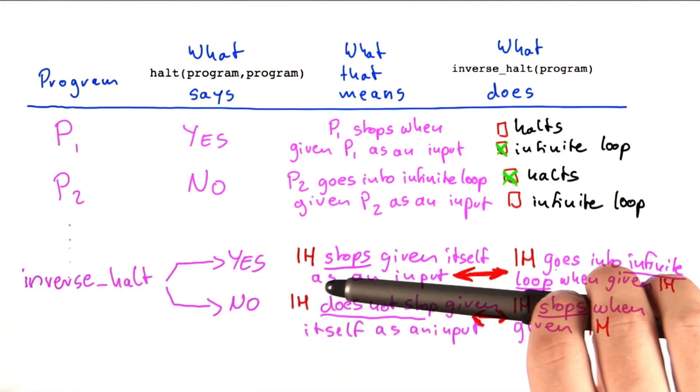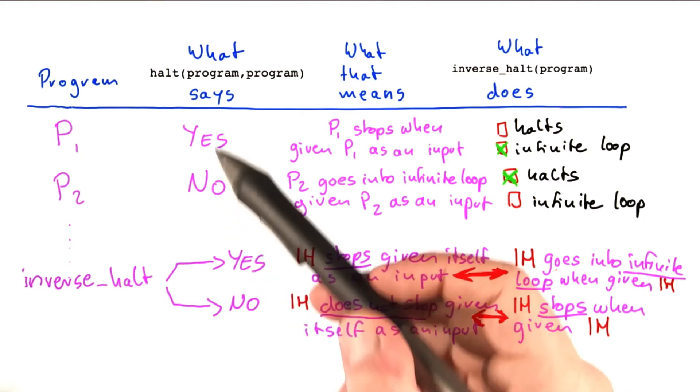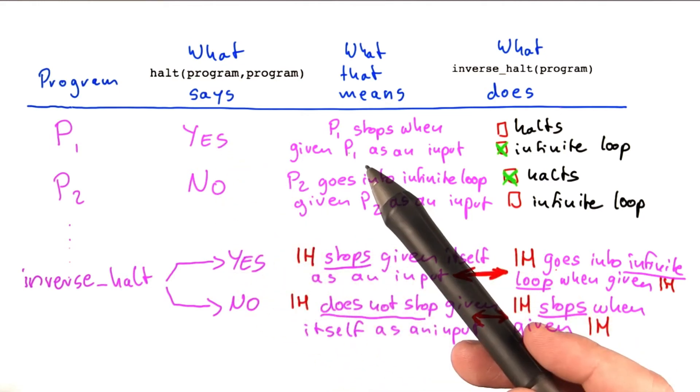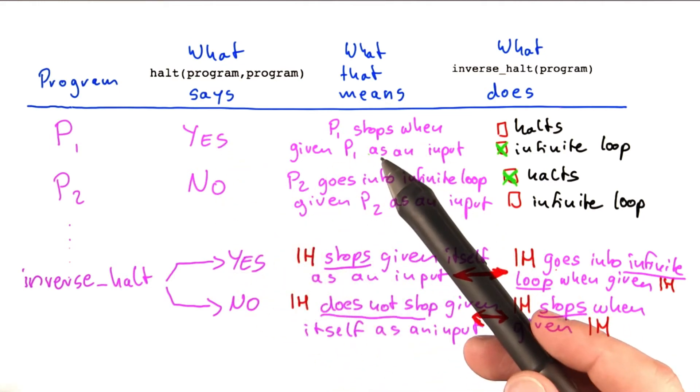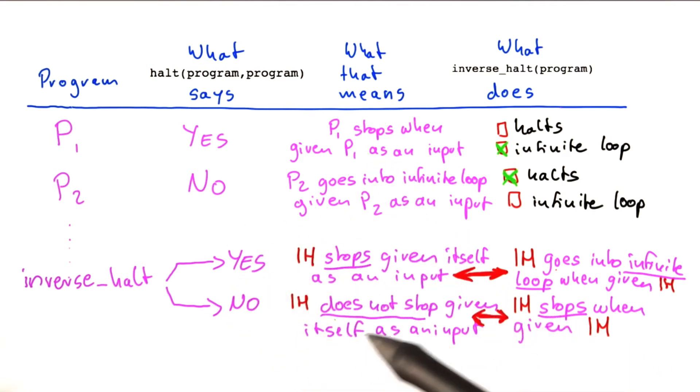Because there's two ways of constructing this table. So the first way is to construct it this way, basically, meaning that we look at what halt says, either yes or no. So we arrive at the conclusion of what the program does based on what halt has to say about that program.